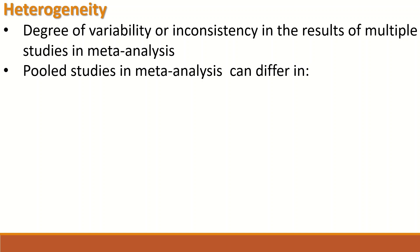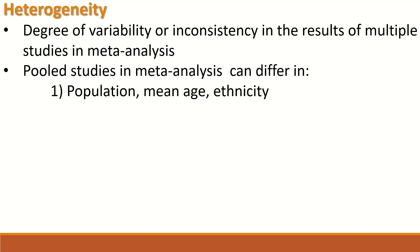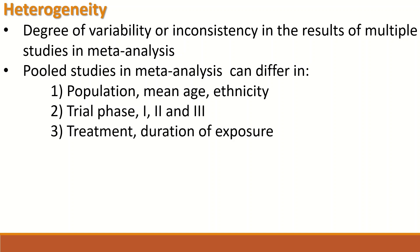Studies pooled in meta-analysis come from different sources — published or online — and when they were designed, they can differ in the population, the mean age of participants recruited, the ethnicity of individuals, whether it is a clinical trial in phase one, two, or three, the treatment applied, the dosage of that treatment or intervention, and the duration of exposure. These differences in the setting of each study might have an impact on the meta-analysis.